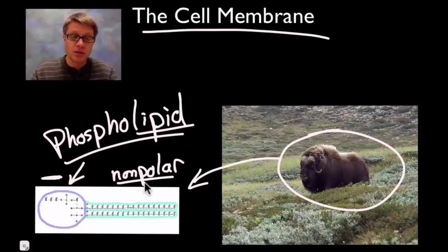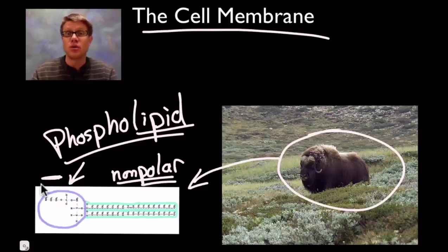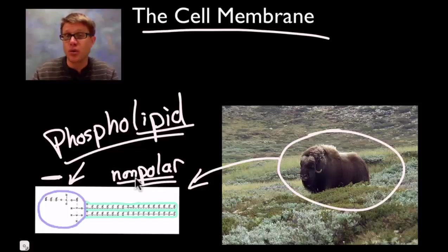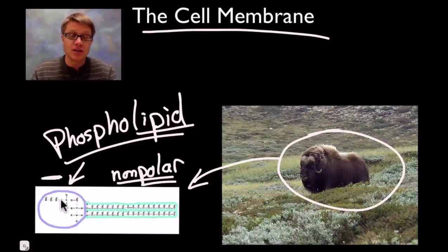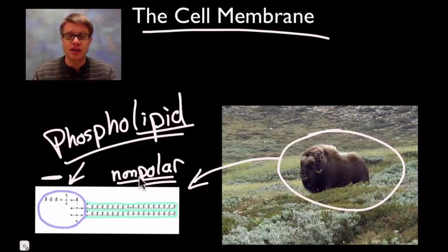What does that mean? Well, this end over here loves water, and this end down here hates water. You know that if you put oil — which is similar to a lipid in structure — in water, it just doesn't mix. So basically the head is going to love water, the tail is not. We call a molecule like this amphipathic.